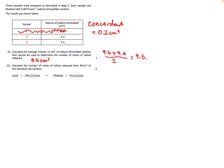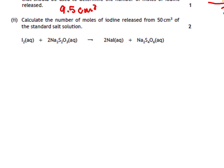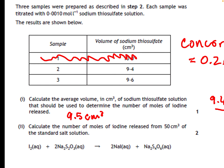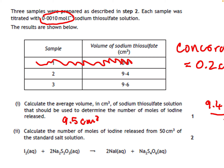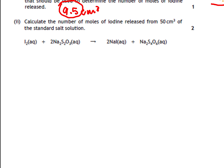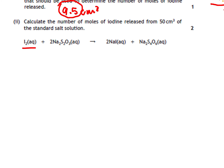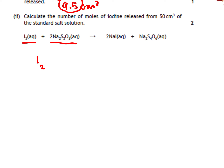We're going to use that average volume to calculate the number of moles of iodine released from 50 cm³ of the standard salt solution. We have a concentration of 0.001 for the sodium thiosulfate and an average volume of 9.5. Let's write down the two things we're interested in: I₂ and Na₂S₂O₃. The mole ratio is one mole to two moles.